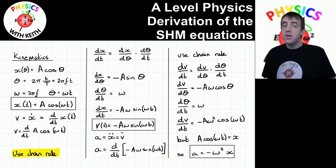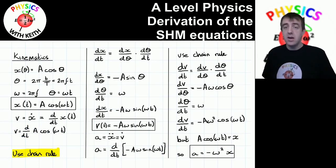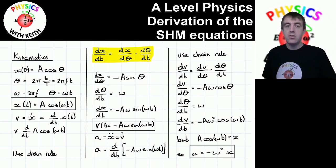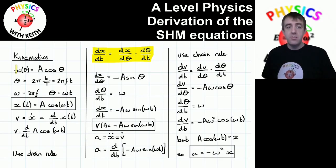If you're studying A-level maths, you may well have already learnt the chain rule, and if you haven't yet, you will learn it. But even if you're not studying A-level maths, it's not too difficult to understand. You can see how the dθ terms would cancel out to give you dx/dt again. We have x as a function of θ, and θ as a function of t.